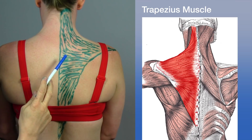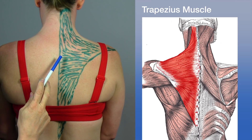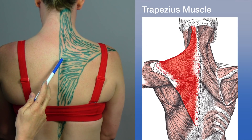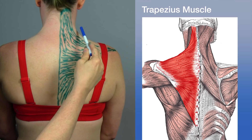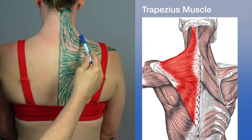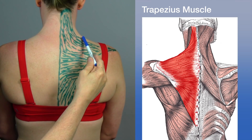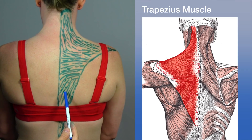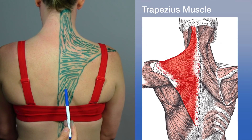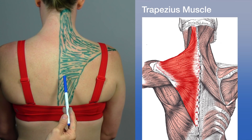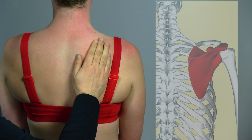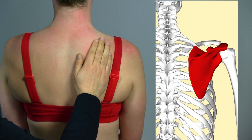Simultaneous contraction of all trapezius fibers adducts the scapula. The upper fibers alone act in elevation and upward rotation of the scapula, while the lower fibers alone act in depression and upward rotation — making it a really interesting muscle.